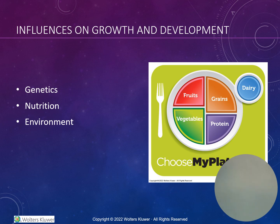Parental traits can appear or reappear in later generations and can actually influence physical characteristics such as gender, race, eye color, height, and weight, as well as overall growth and development. Some diseases and physical and mental disorders can be genetically transmitted.